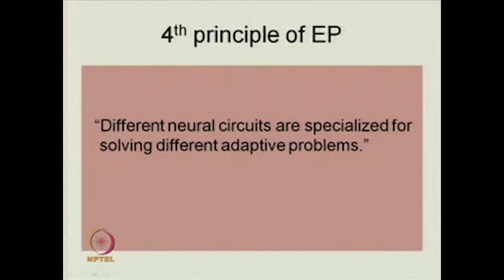The fourth principle of evolutionary psychology: different neural systems or circuits are specialized for solving different adaptive problems. Just as in engineering an all-purpose machine is no good — a hammer cannot do the job of a saw — and just as in the human body organs are devoted to different specializations (the liver for detoxification, the lungs for respiration, the heart for pumping blood), in evolutionary psychology we argue that our neural circuits are specialized for solving different problems. There may be overlaps, but there are definitely circuits specialized for doing different jobs.